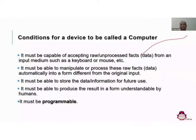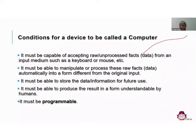The final and most important condition is that the device must be programmable. For any device to be called a computer system, that device should be able to receive instructions and be guided by those instructions. These instructions are what we call programs. This is the most critical condition to check for any device to be called a computer system.